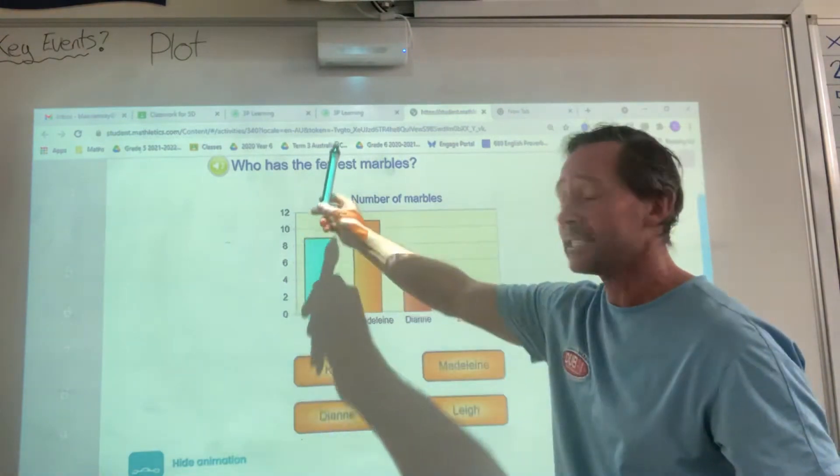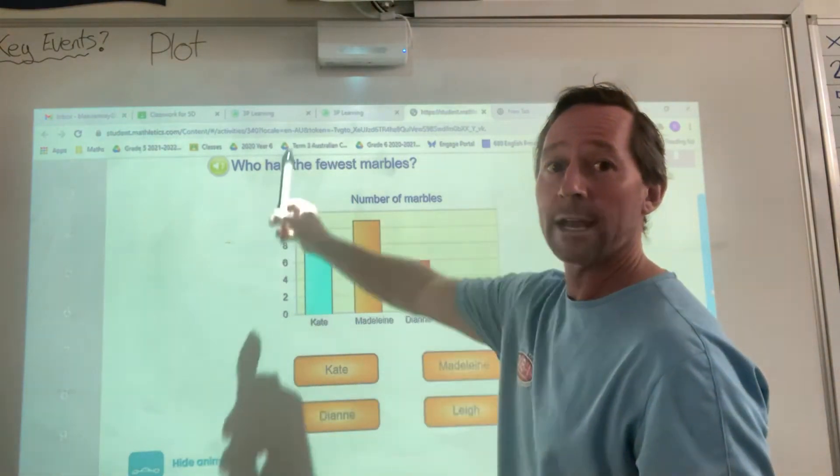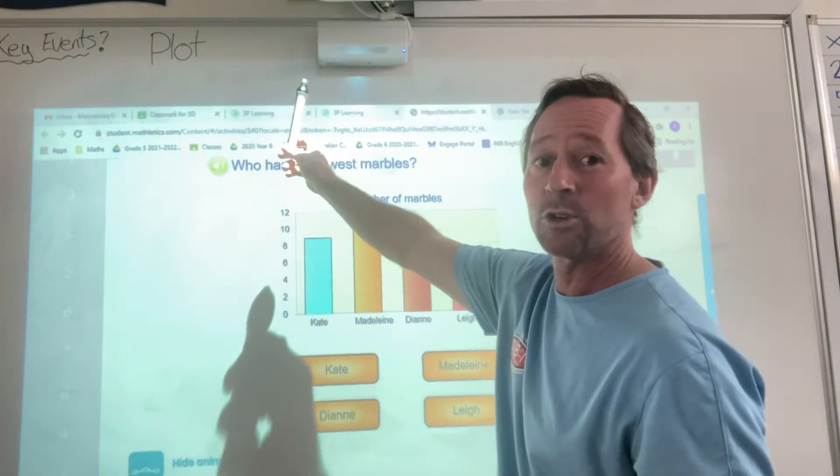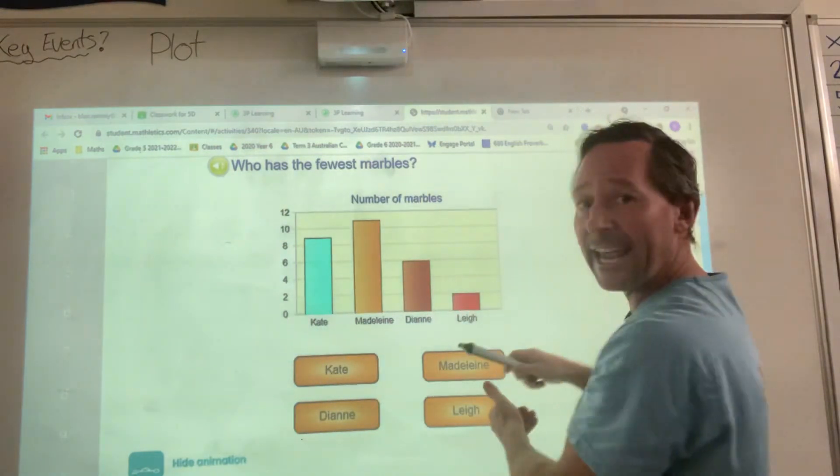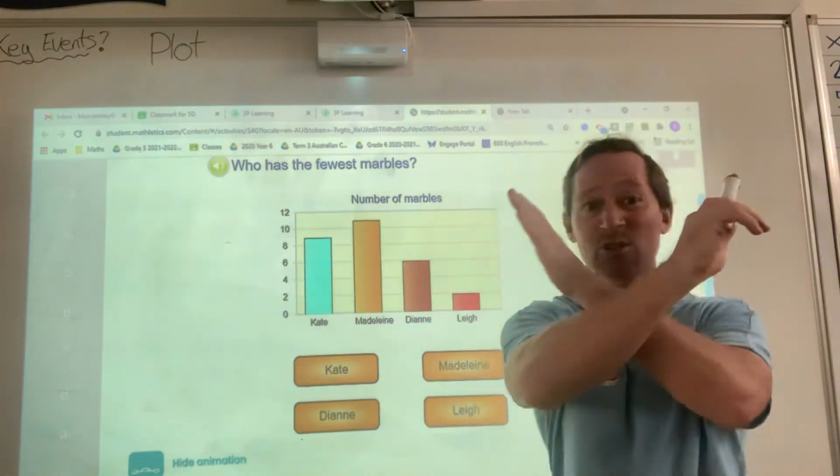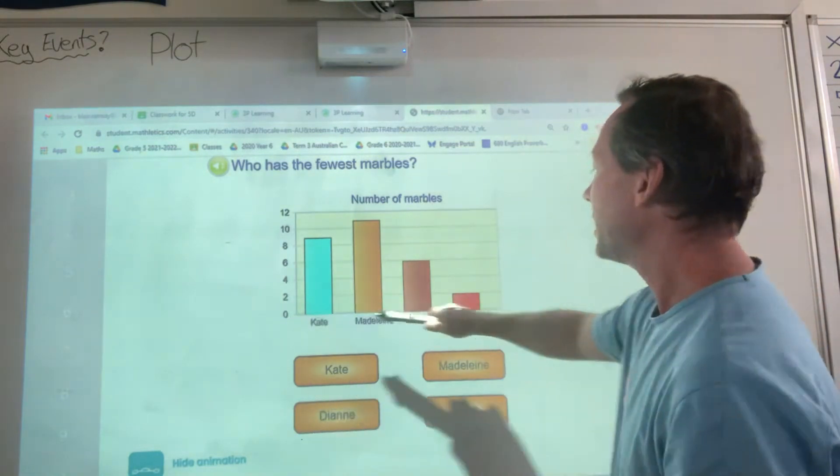We have a y-axis, which goes up towards the sky. Remember, s-k-y, y goes towards the sky, which is vertical, straight up. The horizontal axis, which goes across, is the x-axis. X makes a cross. X-axis goes across.